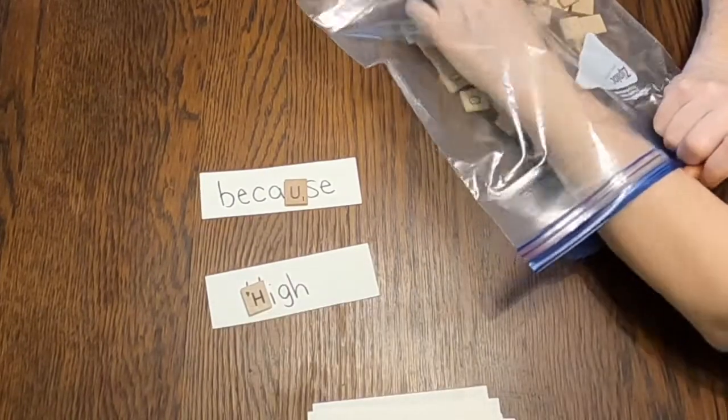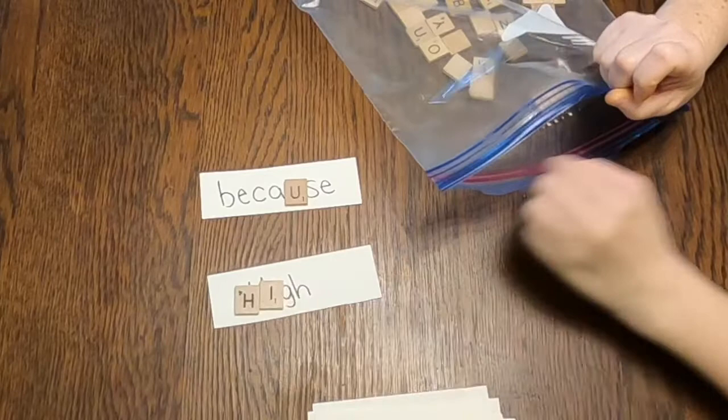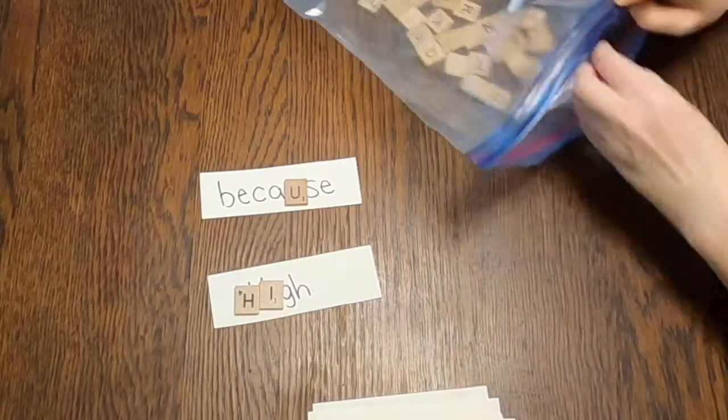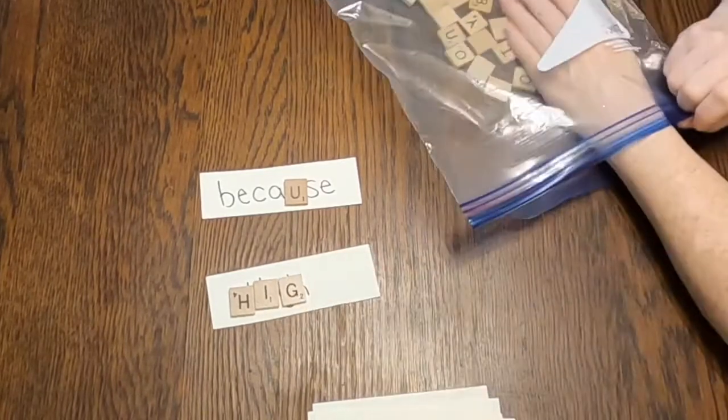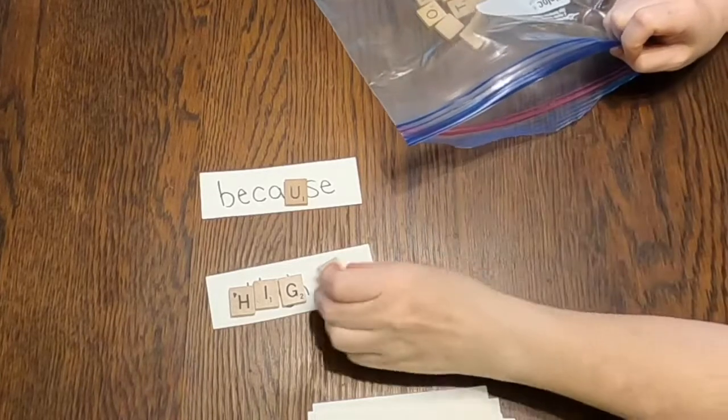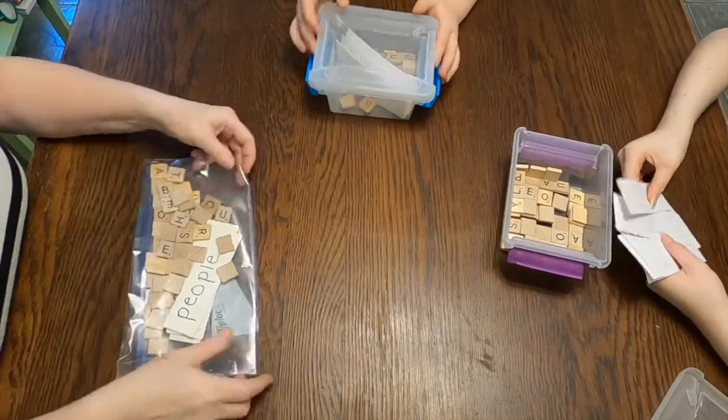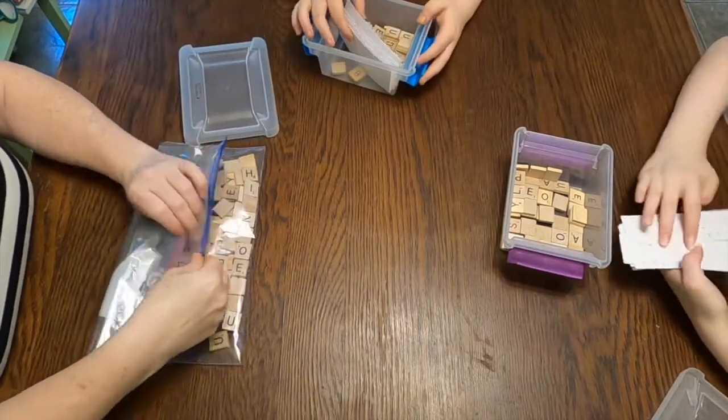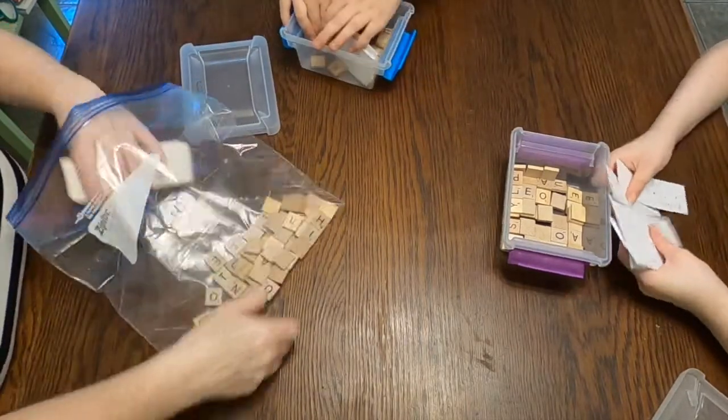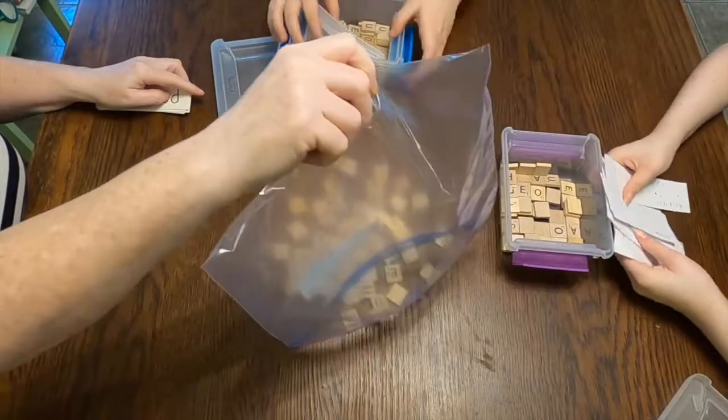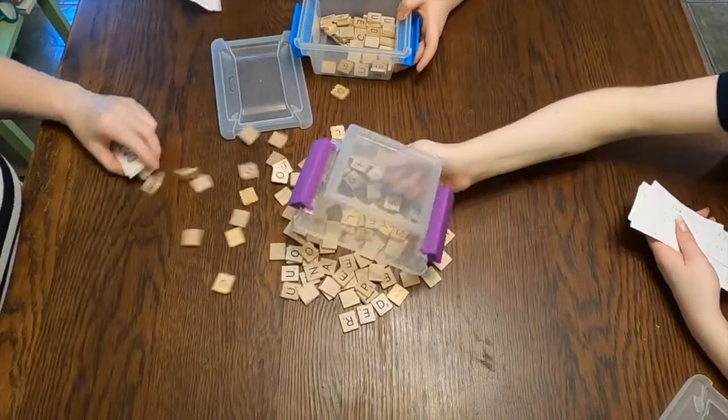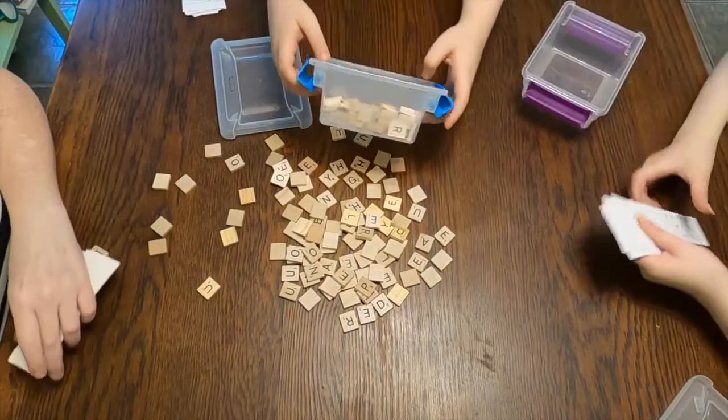So the ultimate goal of the game is to get all of your spelling cards covered with the tiles, but you're not just going to be using your own letter tiles. Let's dive into the game and I will explain how to play. So the first thing you're going to do is each player is going to dump all of their letter tiles into the center of the table. It won't matter because we all have the same words and we're going to all end up with our letters back at the end.